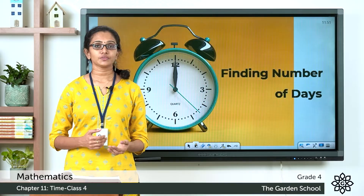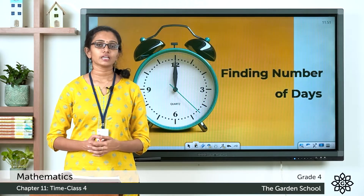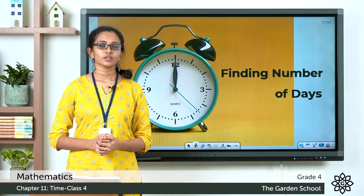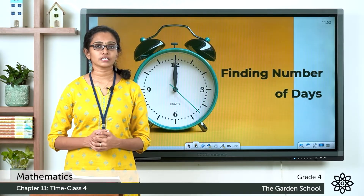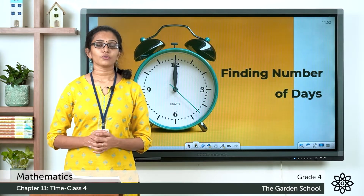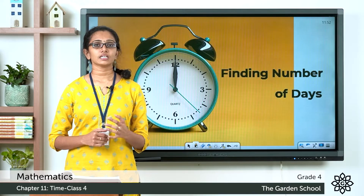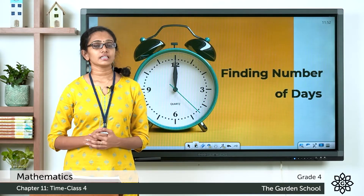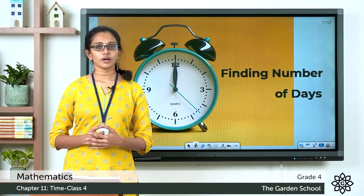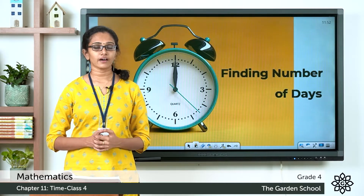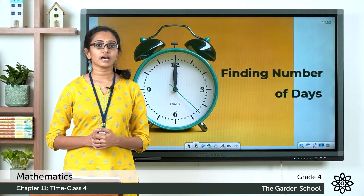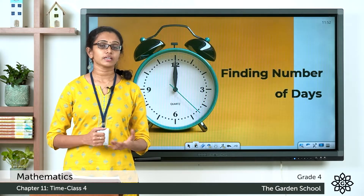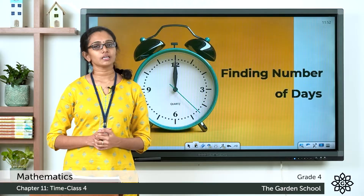Today we will learn how to find out the number of days in between the starting and ending of some events. Before learning to solve such questions it's important to know how many days are there in each month. A calendar year is divided into 12 months — some months have 30 days, some have 31 days, and February has only 28 days except in leap years.